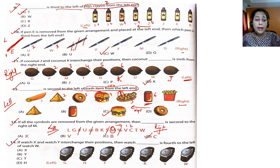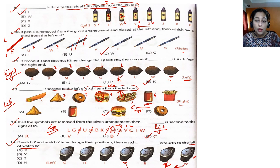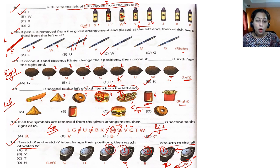Question 14: if watch X and Y are interchanged — Y becomes X and X becomes Y. Then watch dash is fourth to the left of watch W. Left of watch W is this side. Fourth to the left of W: first, second, third, fourth — the answer is watch T. So option C is the answer.